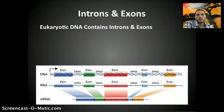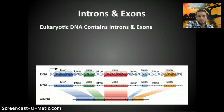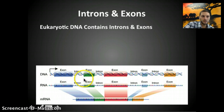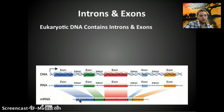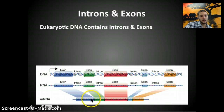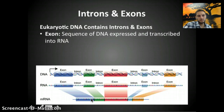Something interesting about DNA is that there are sections not used in gene expression to make proteins. Eukaryotic DNA specifically contains introns and exons. When DNA is copied into messenger RNA, it initially has both exons and introns. Those introns are removed to make mature messenger RNA, so only the exons remain. Exons are the sequences of DNA that are expressed and transcribed into RNA.